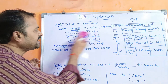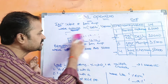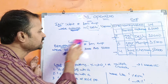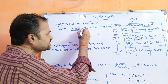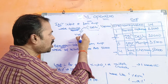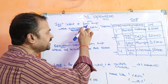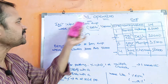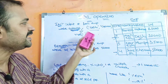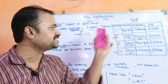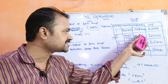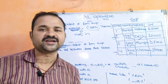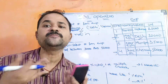Now let us see about NOT IN. The next operator is NOT IN. In place of IN, we use NOT IN. SELECT * FROM EMP WHERE address NOT IN (Delhi, Chennai). The second record contains Delhi and the fourth record contains Chennai, so these two records won't be displayed.